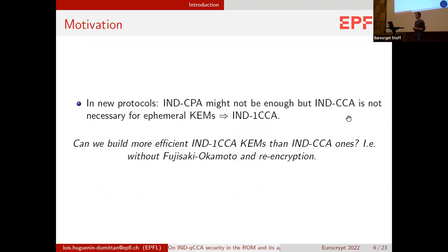We wondered whether we could build more efficient IND-1-CCA KEMs than IND-CCA KEMs built with the Fujisaki-Okamoto transform. As you probably know, in the FO transform there is this costly re-encryption check when you decapsulate. So maybe we can do better.